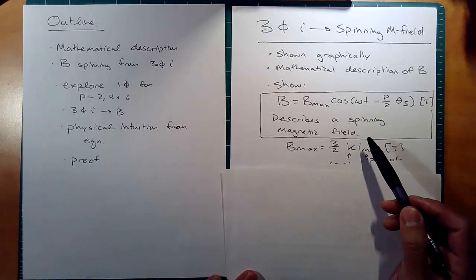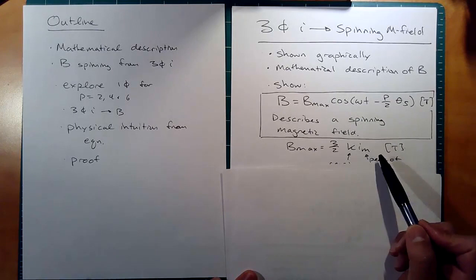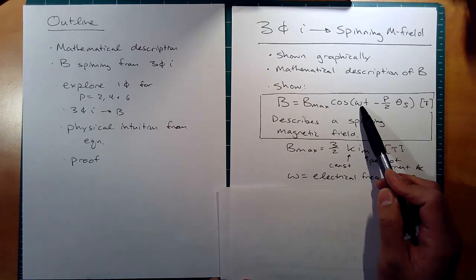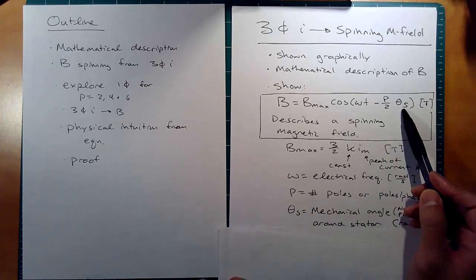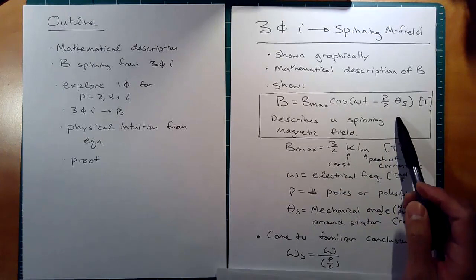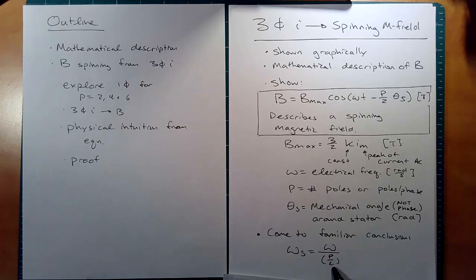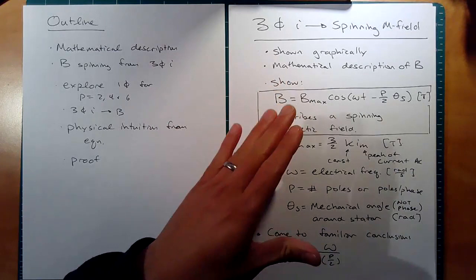Some facts about this equation: B max is related to current via Ampere's law. Omega is related to the electrical frequency of the current. P is the number of poles per phase, and theta s is the mechanical angle around the stator. We'll also arrive at the familiar conclusion that synchronous speed is related to the electrical frequency divided by p over 2 — which we saw when we studied two-pole and four-pole systems. Keep this in the back of your mind as we work our way to this equation.